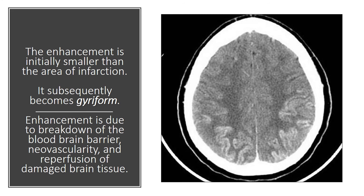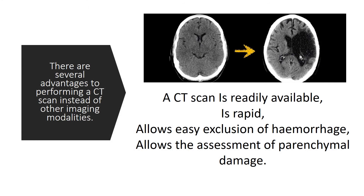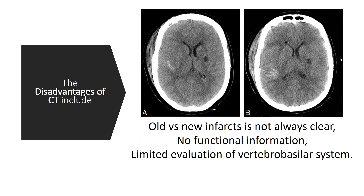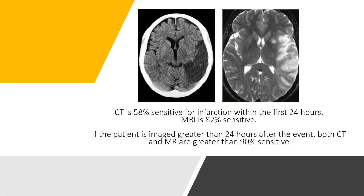There are several advantages to performing a CT scan: it is readily available, rapid, allows easy exclusion of hemorrhage, and allows assessment of parenchymal damage. The disadvantages of CT include difficulty distinguishing old versus new infarcts, no functional information, and limited evaluation of the vertebrobasilar system. CT is 58% sensitive for infarction within the first 24 hours, while MRI is 82% sensitive. If the patient is imaged greater than 24 hours after the event, both CT and MR are greater than 90% sensitive.